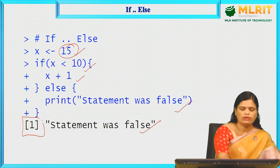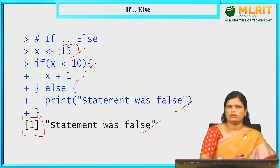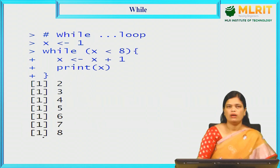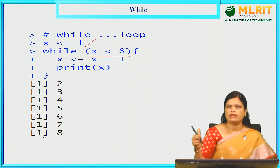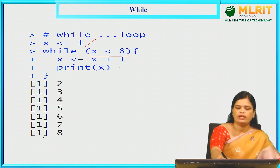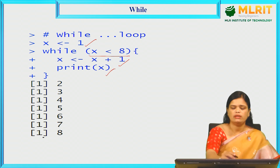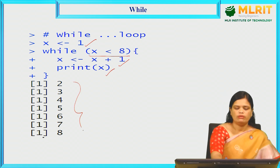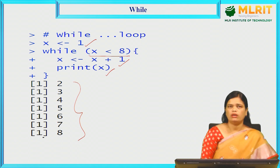Whenever you find these kind of square brackets, you understand it is an output displayed on the screen. Next loop is the while loop. Here, we are assigning the x value to 1 and checking the condition x is less than 8. We are incrementing the x value and printing x. Look at the output — we have got the values from 2 to 8 displayed on the output screen.